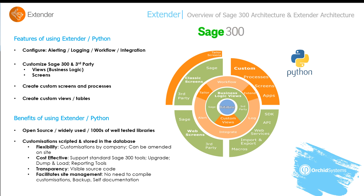The benefits of using Extender and Python for your customisation: Python is an open-source language widely used with thousands of well-tested libraries. The customisations are scripted and stored in the Sage 300 company database, giving you flexibility to deploy company by company and amend on-site. It's cost-effective because customisations support standard Sage 300 tools like upgrade, dump and load, and reporting. It gives you transparency as the source code is visible, and there's no need to compile customisations version by version. The source code is backed up when you back up the company database and is self-documenting on site.